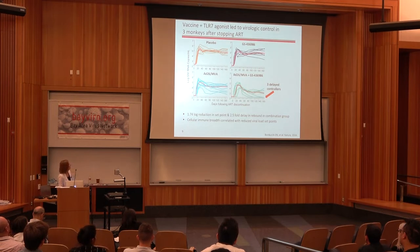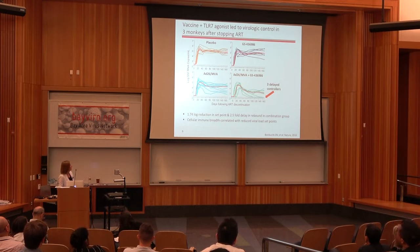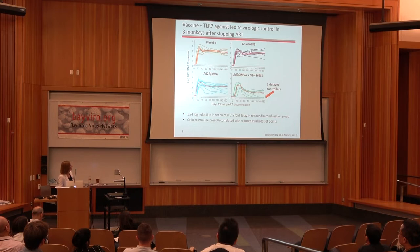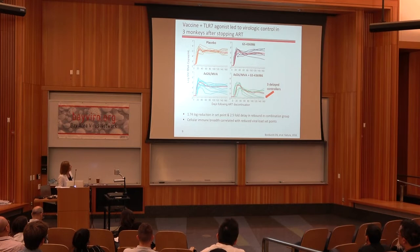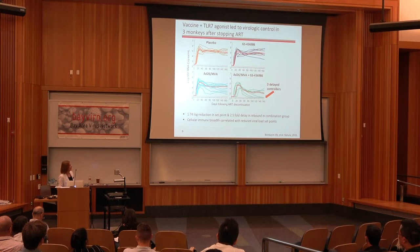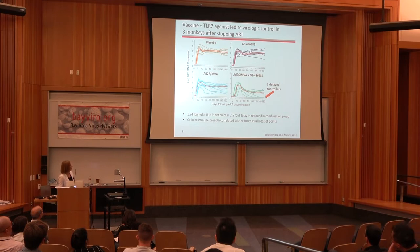In the placebo control group, all animals rebound within about two weeks of ART stop. In the TLR7-only treatment group, the rebound kinetics looked fairly similar with no statistically significant differences. We begin to see some differences in our vaccine group and more notably in the combination treatment group, where we see a 1.474 log reduction in set point viral load, and also a delay in rebound in some animals. Most notably, three out of nine animals display delayed control, suggesting that functional cure is possible in this model of acute infection and prolonged ART therapy.